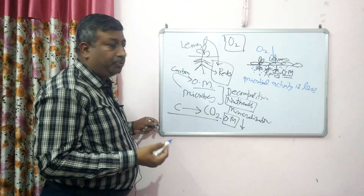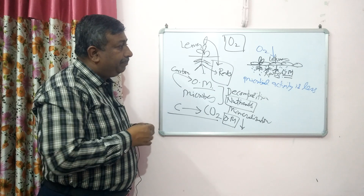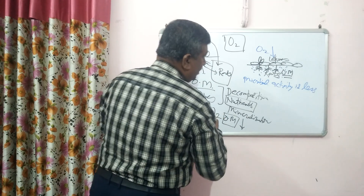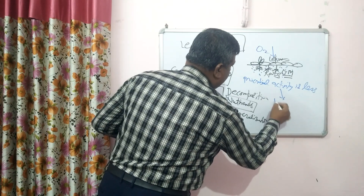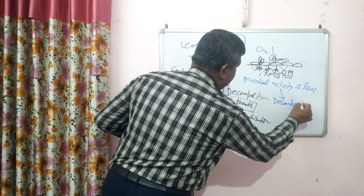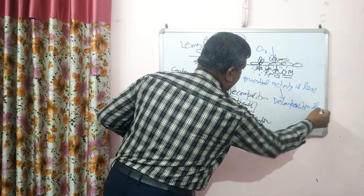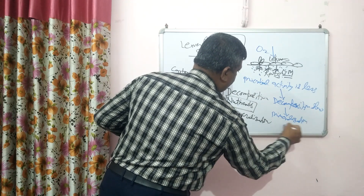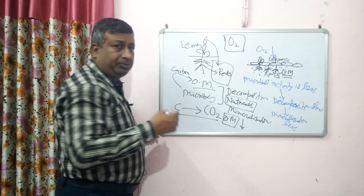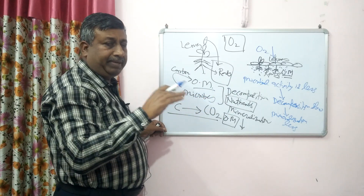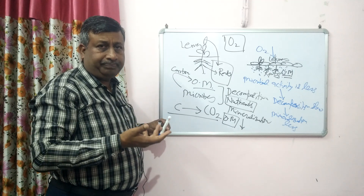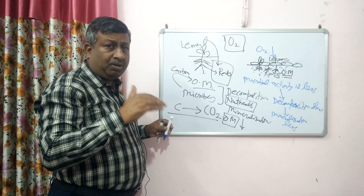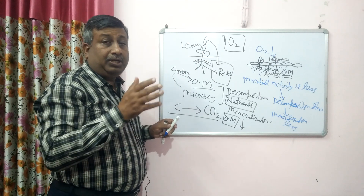Because the soil is not exposed, oxygen availability is limited, microbial activity is less, and decomposition is very slow. Because of this slow decomposition, mineralization is also less. So that is why organic matter content remains as such and is maintained — more so as compared to the conventional tillage system.